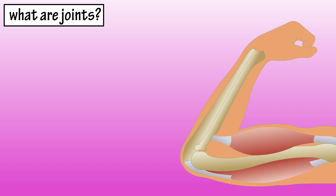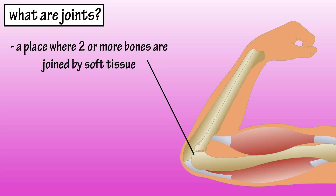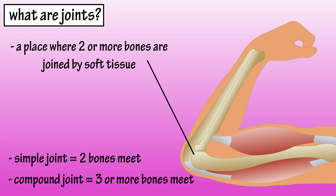What are joints? In the body, a joint is a place where two or more bones are joined by soft tissue. If two bones meet, it's a simple joint, and if three or more bones meet, it's a compound joint.